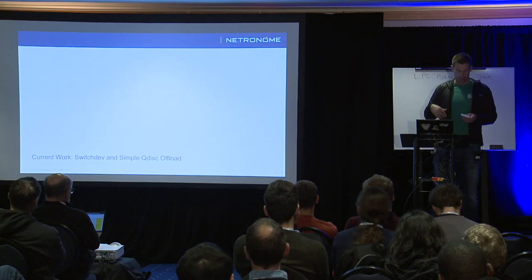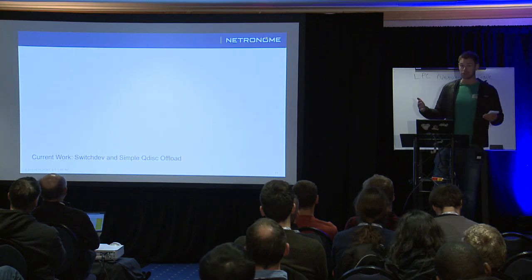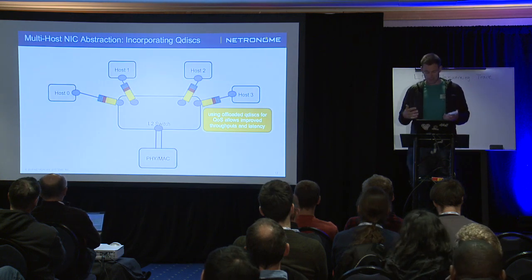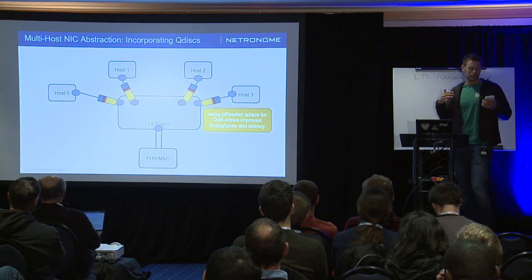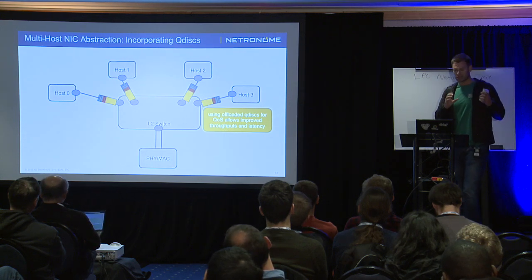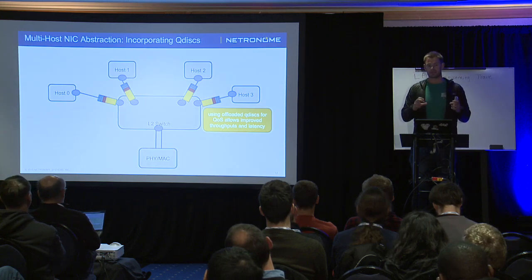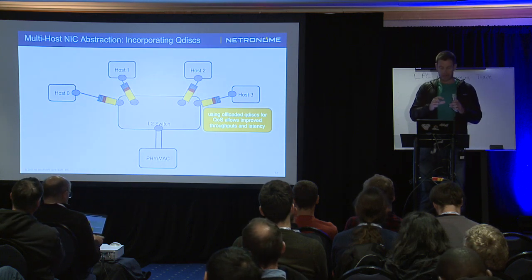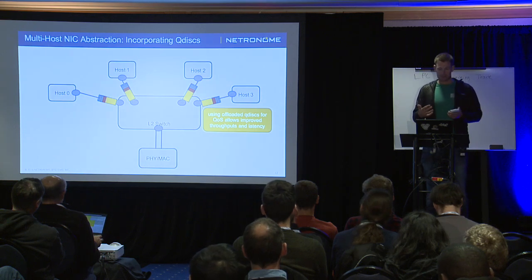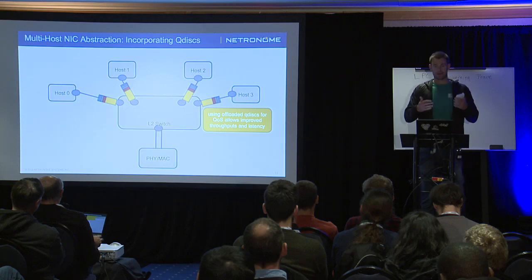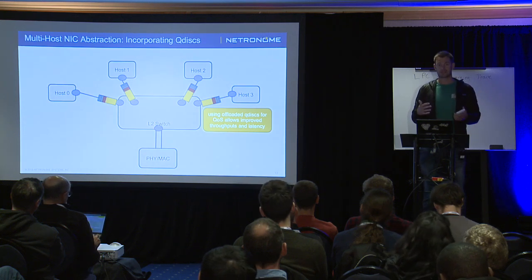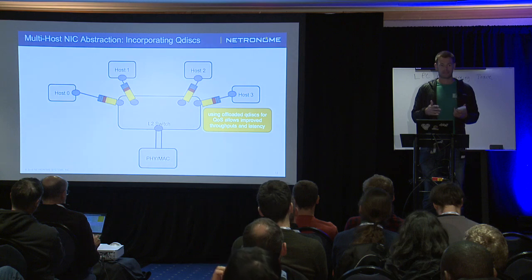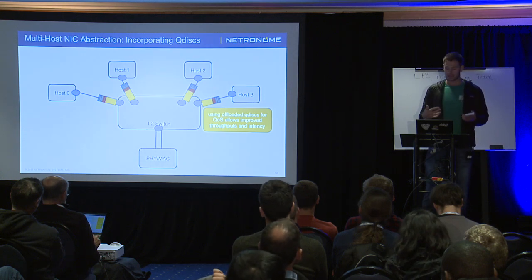The next bit is to go through what's been done already as of two weeks ago. The first step was really having a simple set of single QDiscs without a hierarchy attached to these representers. We added the architecture of the representers with SwitchDev and then added in single QDiscs. All of the traffic would be handled by a single RED QDisc at this point, which could provide some features when all the traffic was under the same basic priority for the host — but that was about all it could do.